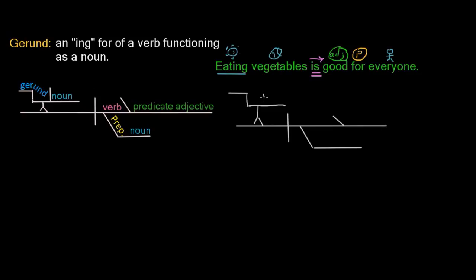Now we're ready to start filling it in. Our gerund, the first word in the sentence — we'll capitalize it — is eating, and we put it on there like it's falling down the staircase. The object of our gerund is vegetables. We're eating what? Vegetables. Our verb is is, our subject complement in this case is a predicate adjective: good. We're saying eating is good. And we have a prepositional phrase functioning adverbially — modifying the verb — for everyone.